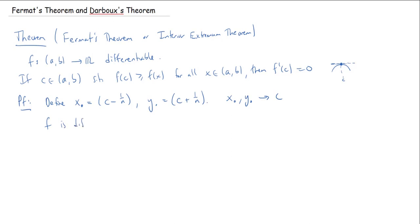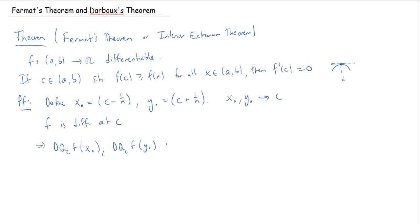Since C is inside the interval (a, b), we know f is differentiable at C. This tells us that the difference quotients of f at C, applied to each of these sequences, must converge to f′(C). So if I take the difference quotient of f at C applied to x_n, or applied to y_n, both have to converge to f′(C) — that follows from our sequential characterization of the derivative.